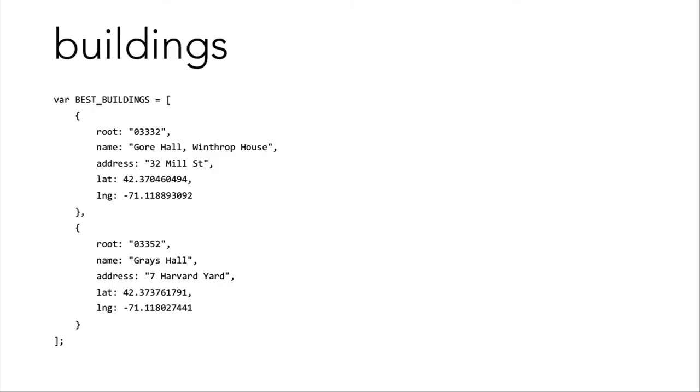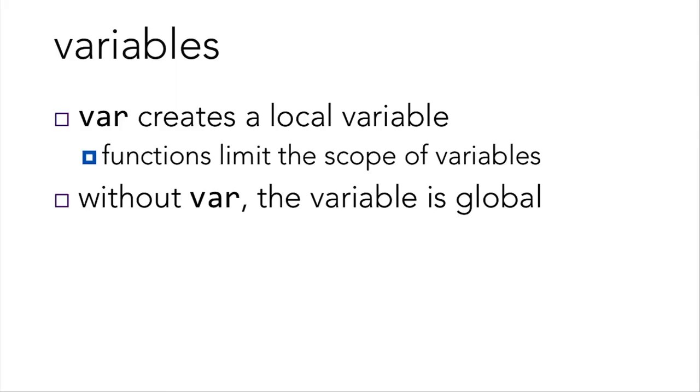We see an array of buildings in buildings.js — again, an array of objects. If I wanted to make an array of the best buildings on Harvard campus, I would make it using this object notation, storing the root, name, address, latitude, and longitude for every single building object. Let's quickly talk about variables in JavaScript. Like PHP, JavaScript variables are weakly or loosely typed. To create a local variable, you prefix the variable name with var.